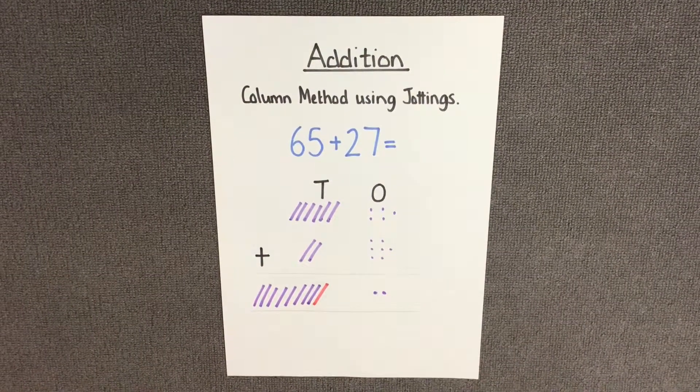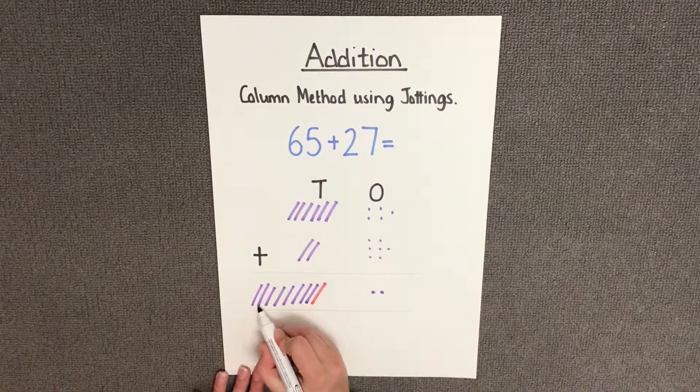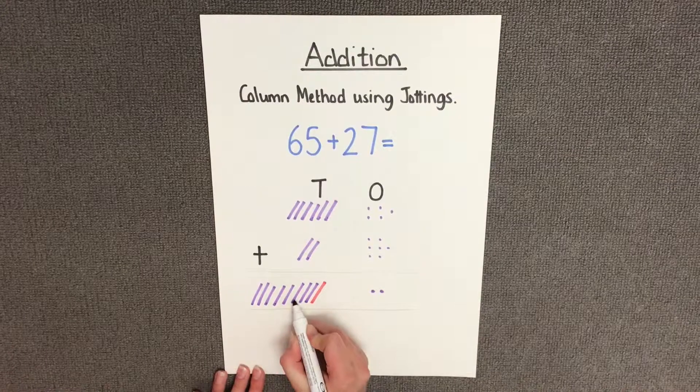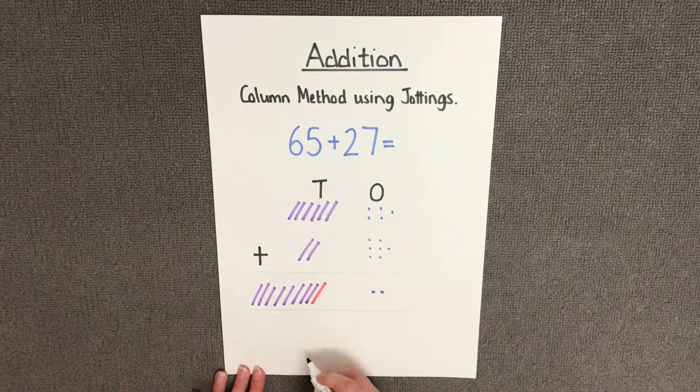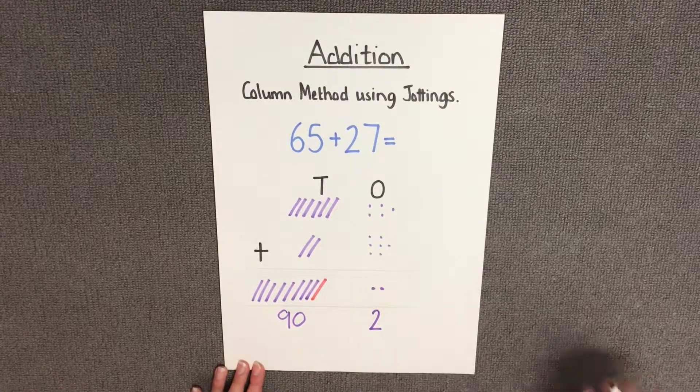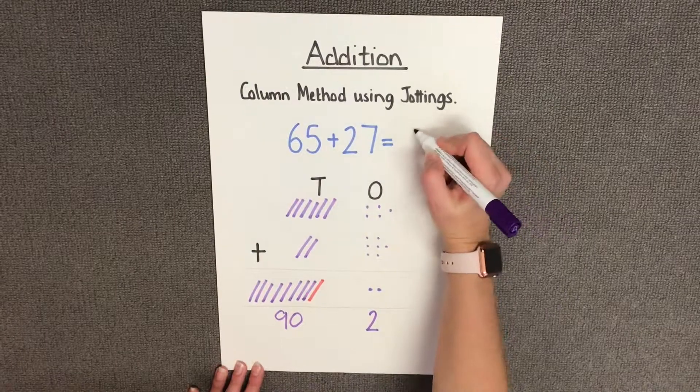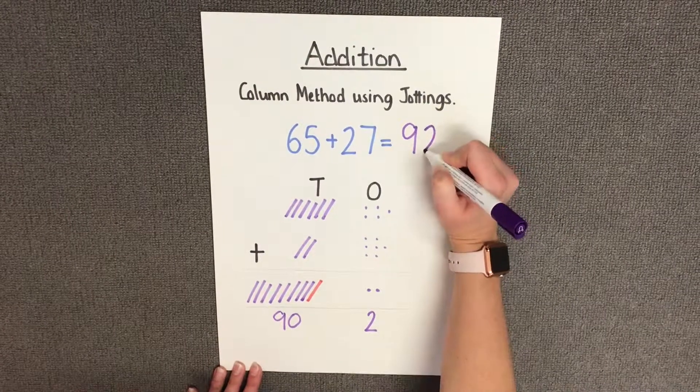Our final step is to find out how many we have all together. So I have 1, 2, 3, 4, 5, 6, 7, 8, 9 tens or 90. And I have 2 ones, which is 2. So therefore, the answer to 65 add 27 would be 92.